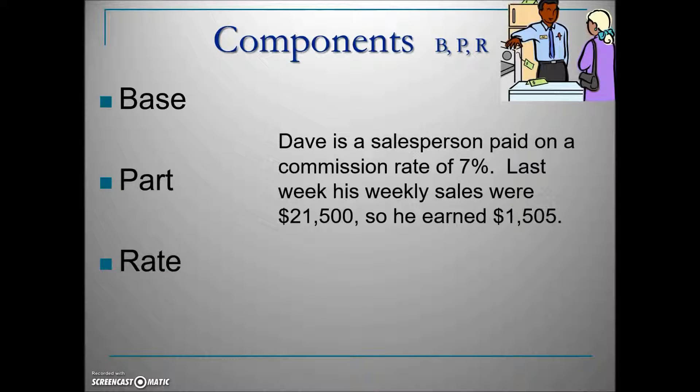Here's another example. There's nothing to solve—we're just asked to identify the three components. Dave is a salesperson paid on a commission rate of 7%. Last week his weekly sales were $21,500, so he earned $1,505.